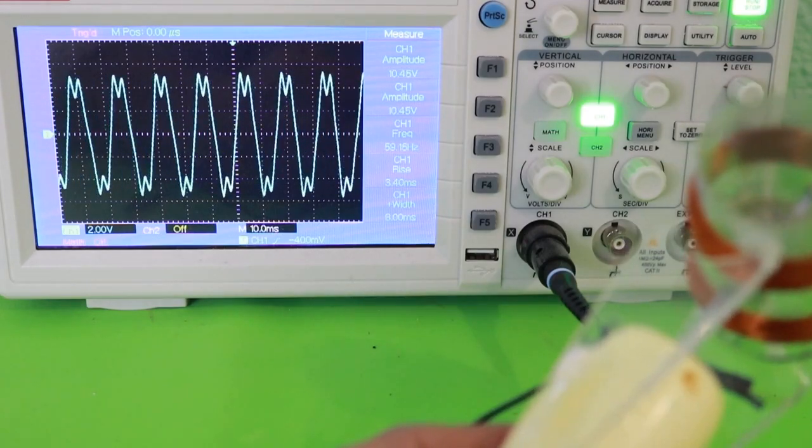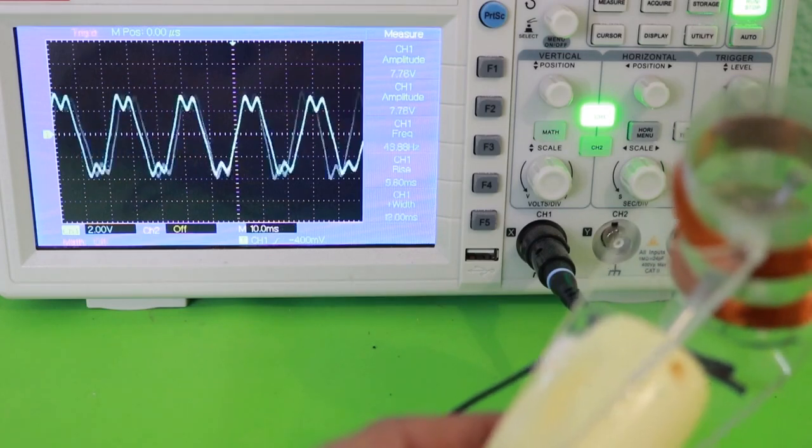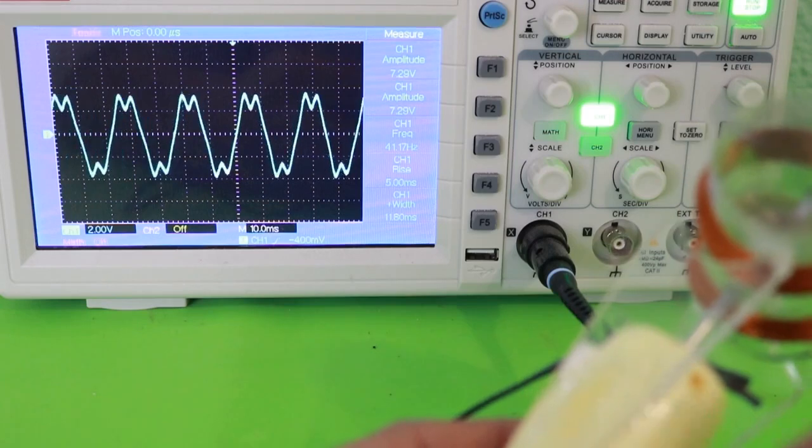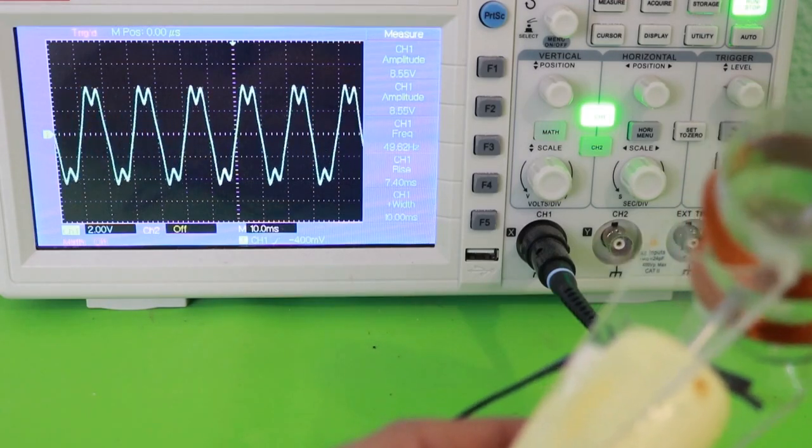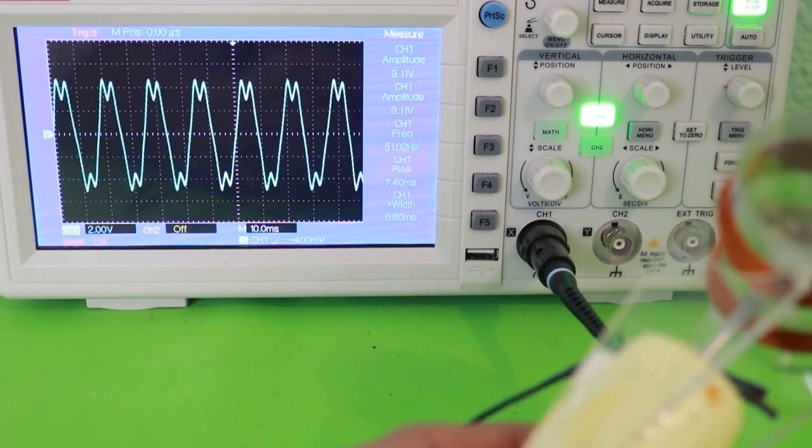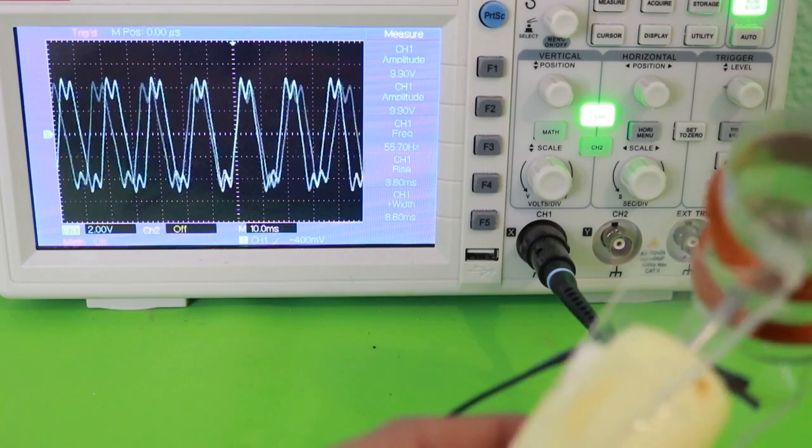We now have around 60 hertz and at slower speed we are at 40, 36. And the amplitude since we have two volts per division on the oscilloscope we can see that the peak voltage is a little bit more than four volts.